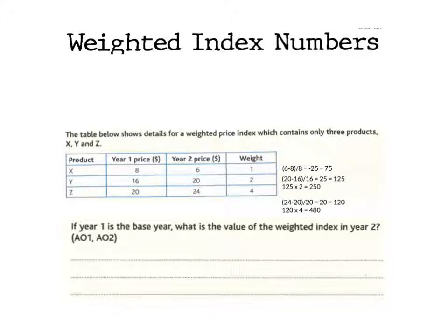You should have got the following: 250 for product Y because there should be an index of 125 times that by two. For product Z you should have got an index of 120 times that by four because it's got the highest weight, and you should have got 480.